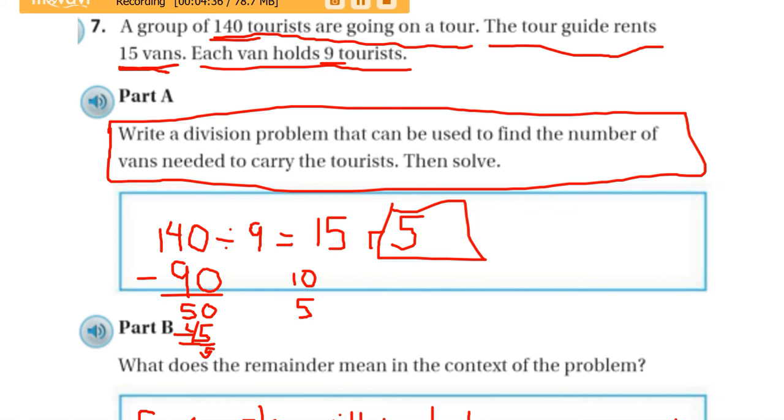And the remainder tells me that, no, he does not have enough. He will need, oh my goodness, he will need 16 vans. Because, just like those problems we did before, right, the way we need to interpret this remainder is to add 1 to the quotient.